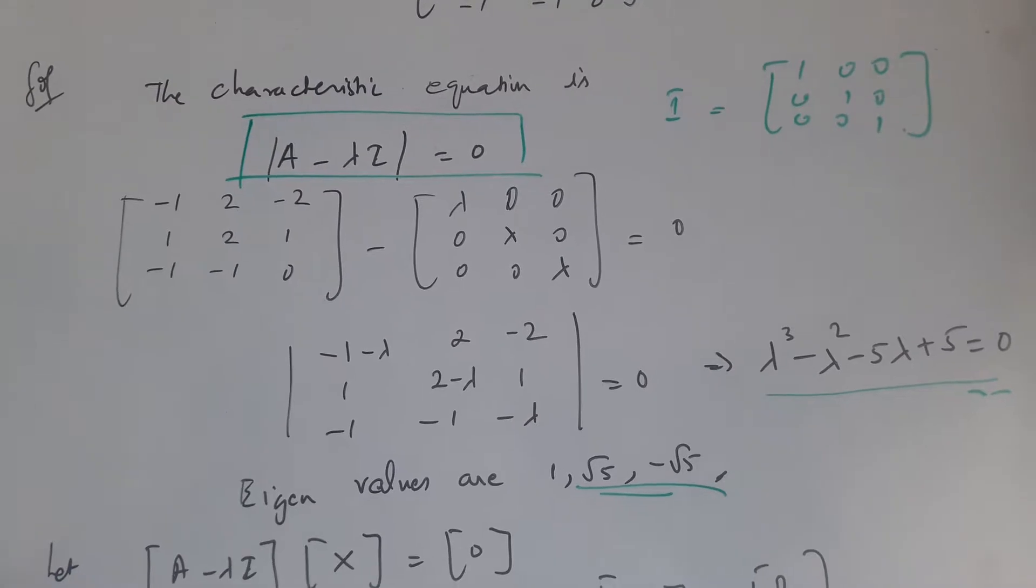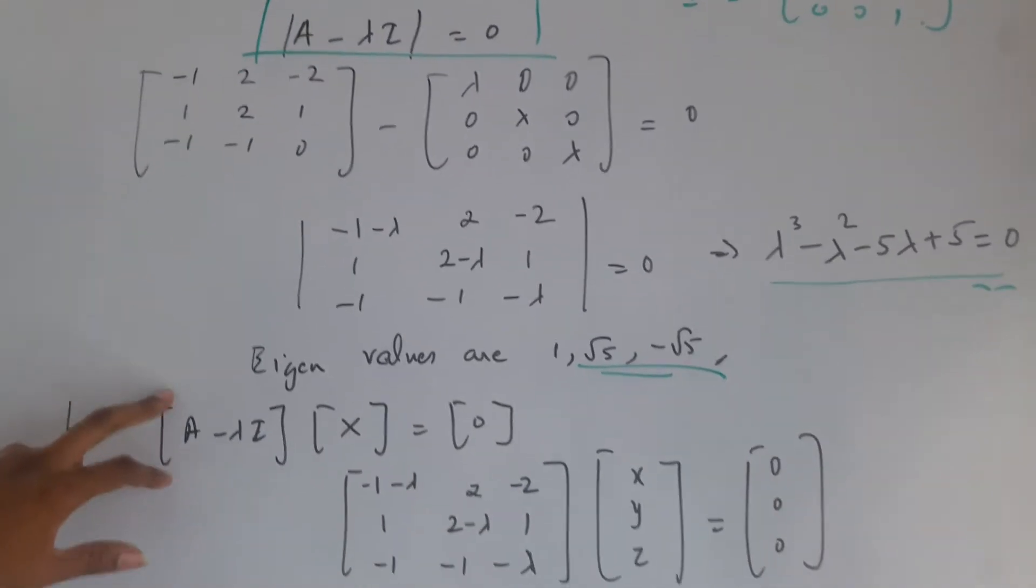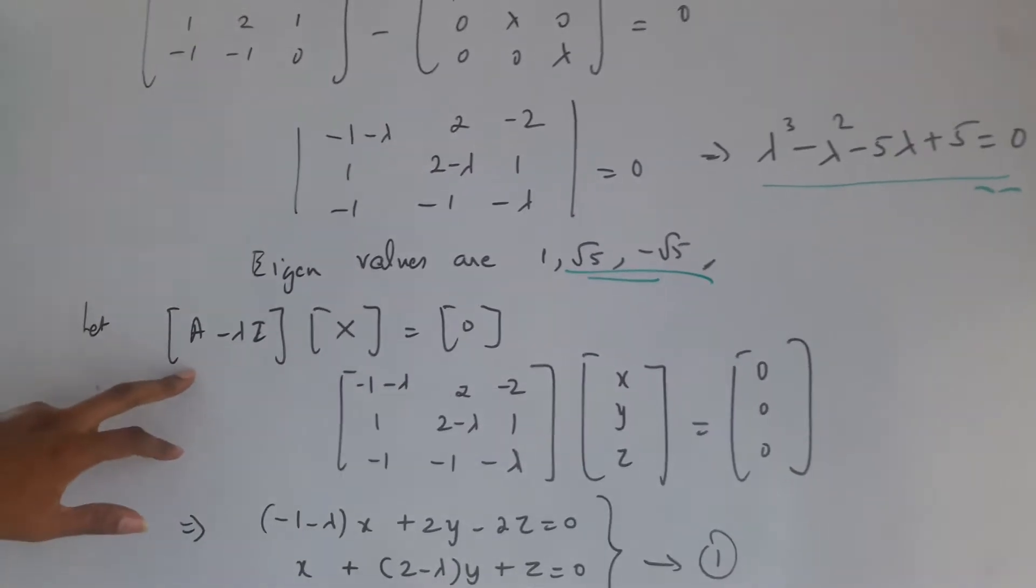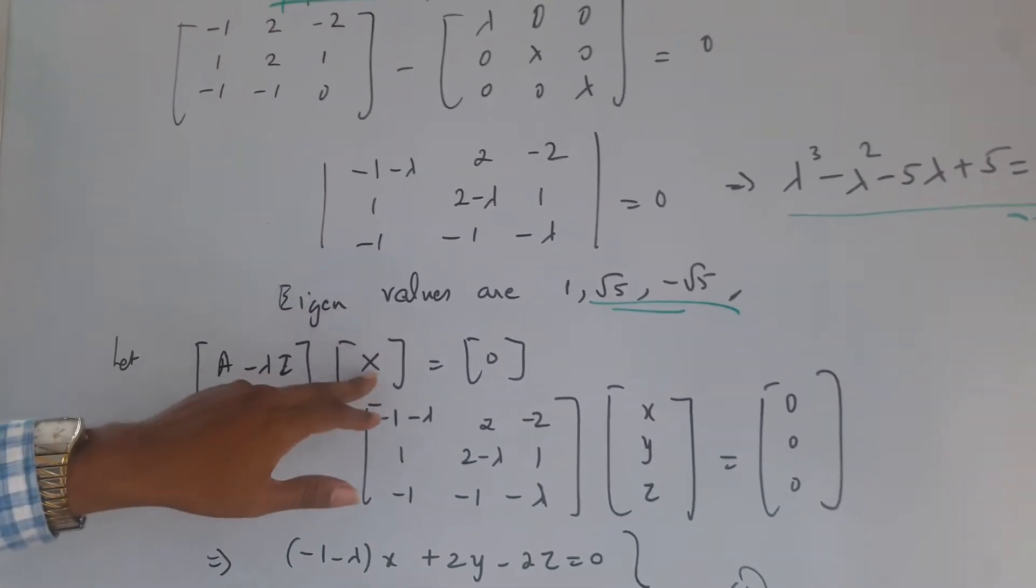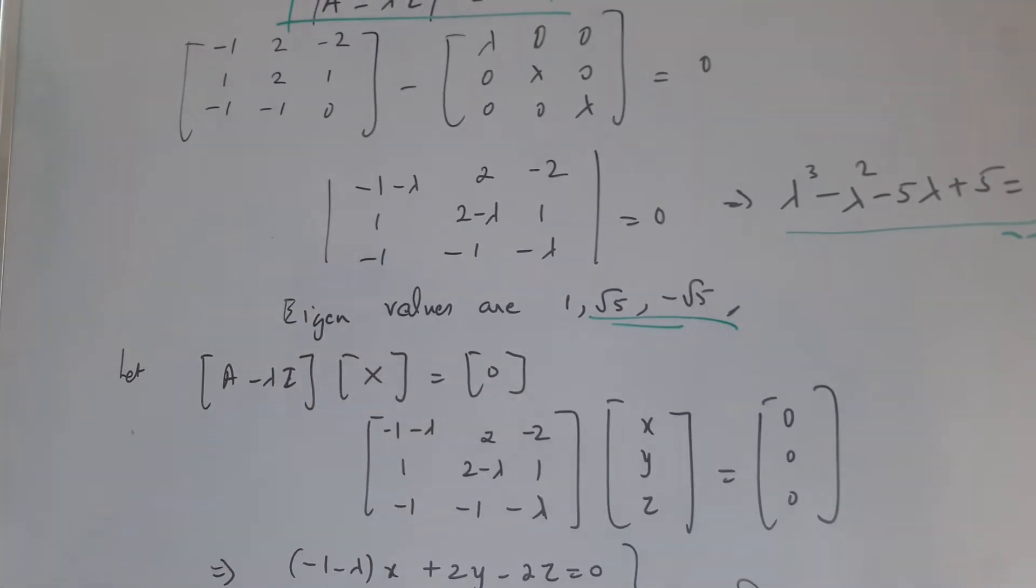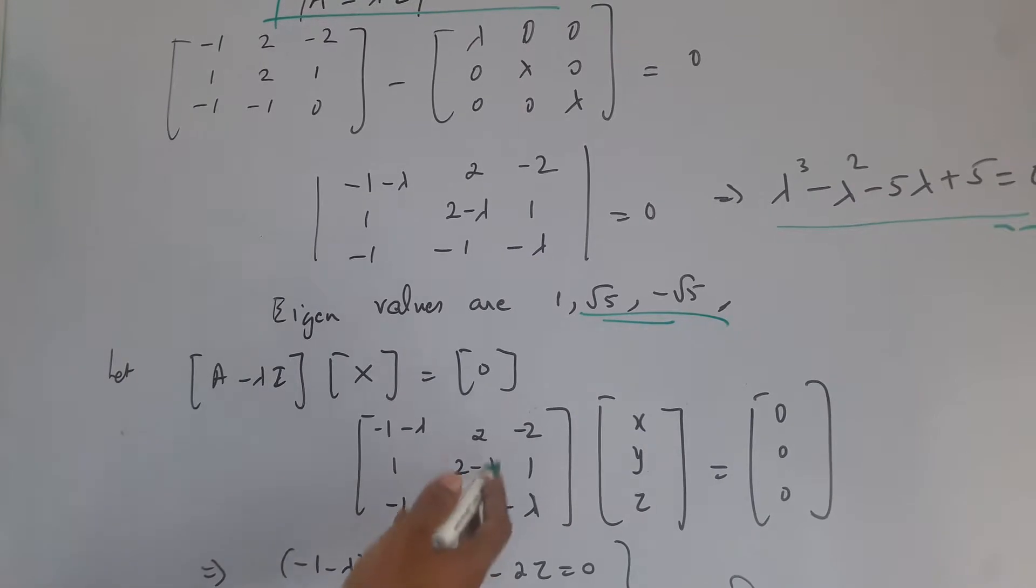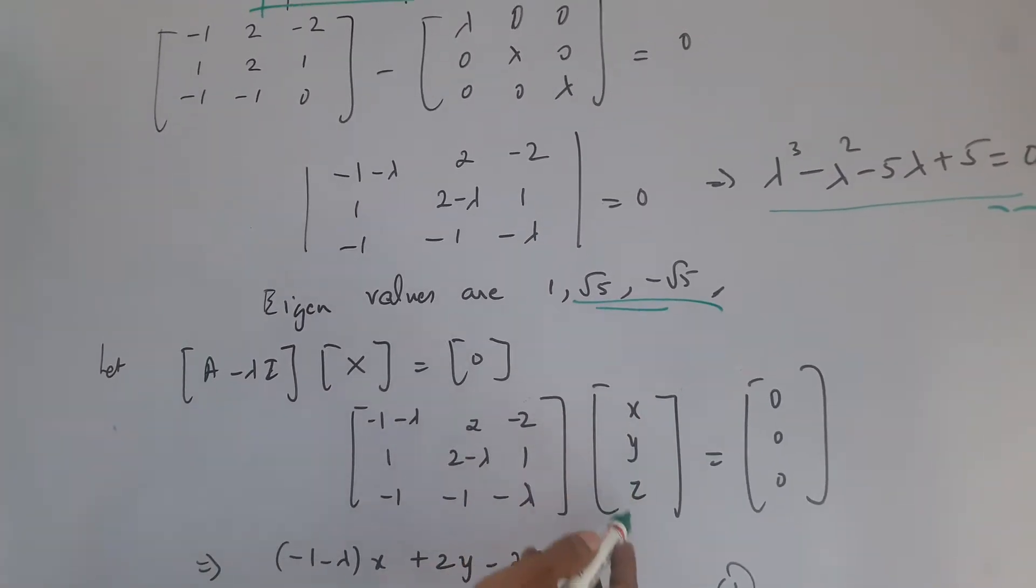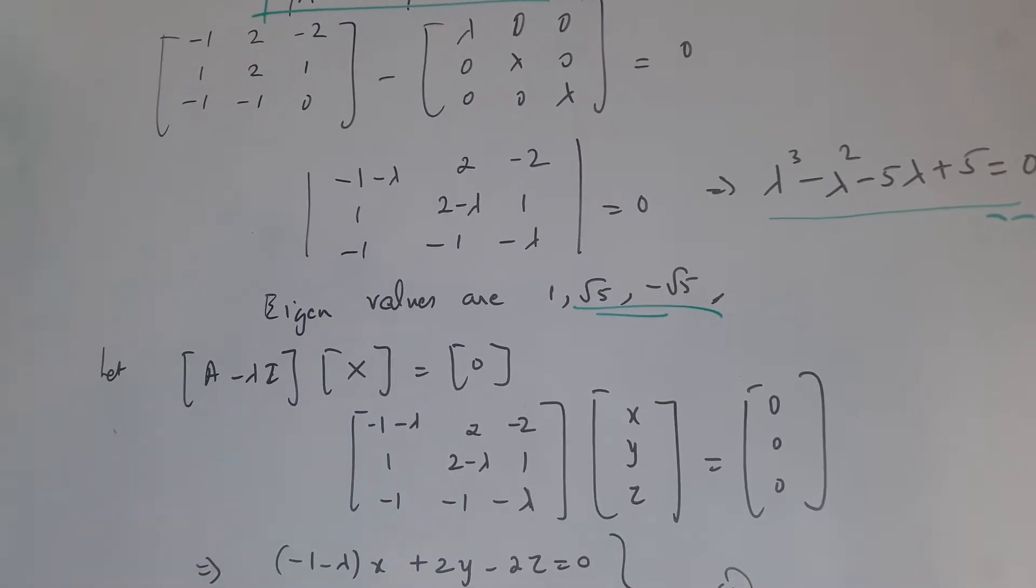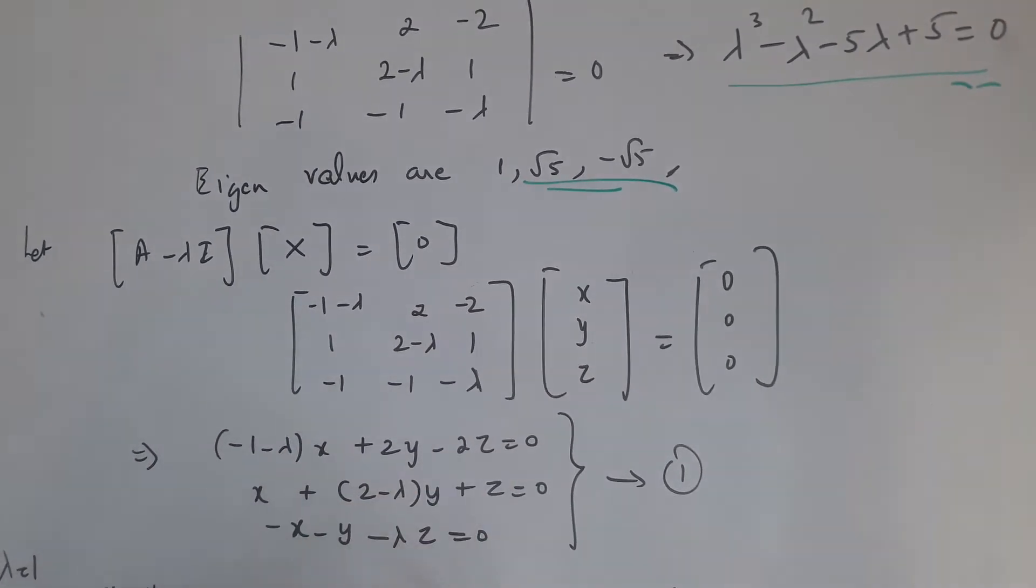Now what we are considering is to find the diagonal form, that is A minus lambda I times X equals 0. So A minus lambda I which I already got there, and X becomes X, Y, and Z.